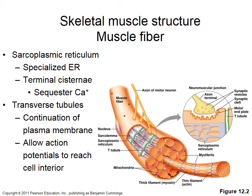Skeletal muscles are innervated by motor neurons. The sarcolemma has wrinkles or bumps to increase surface area — that area is called the motor end plate. Motor neurons release acetylcholine, and skeletal muscles have nicotinic cholinergic receptors for acetylcholine on the motor end plates.